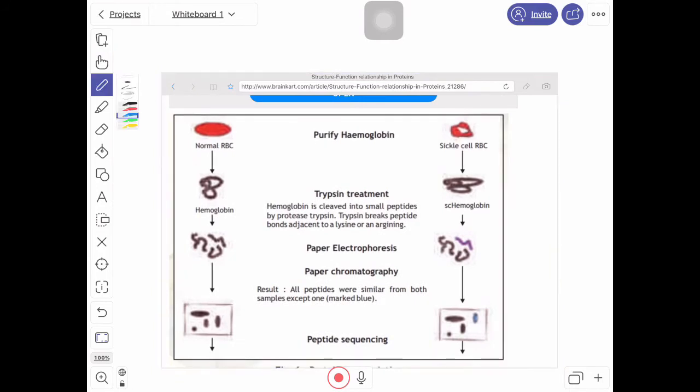He has taken normal RBC and sickle cell RBC and they are treated with trypsin. The trypsin breaks peptide bond adjacent to lysine or arginine. Then done paper electrophoresis, rotated into 90 degrees, then paper chromatography.